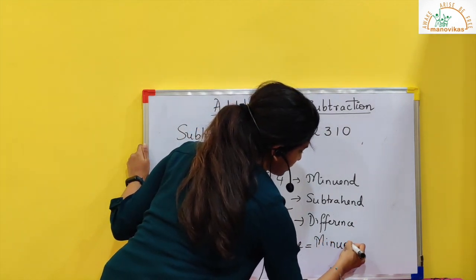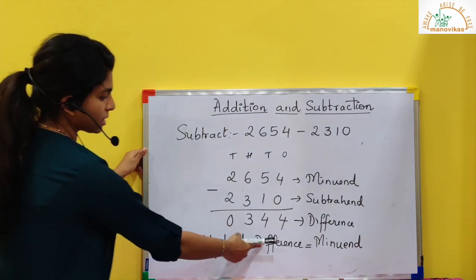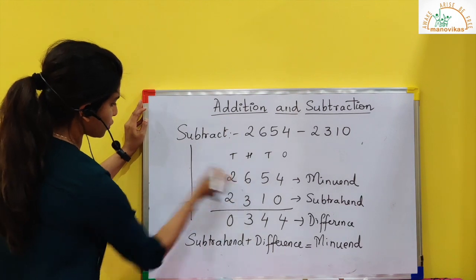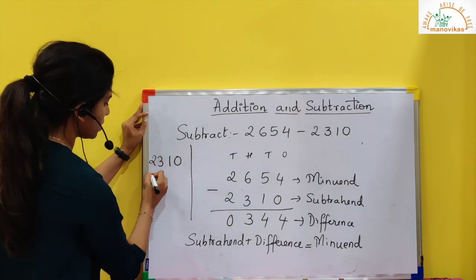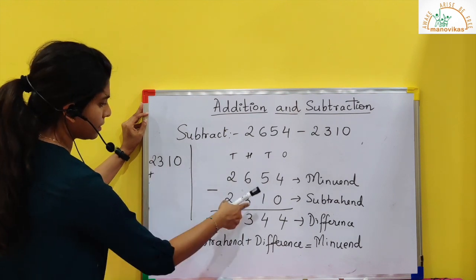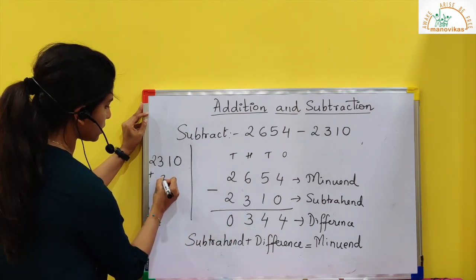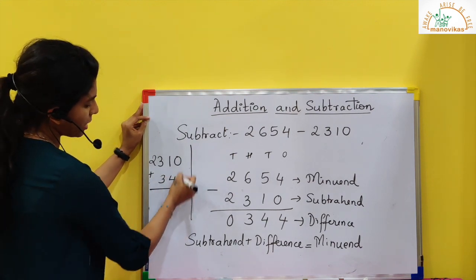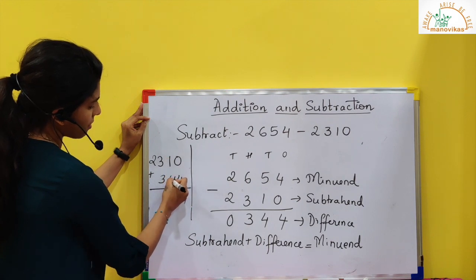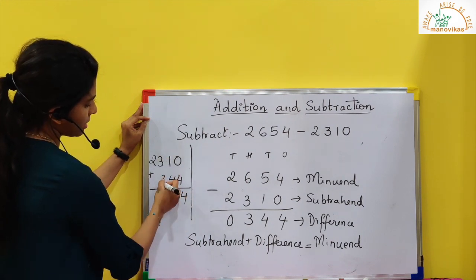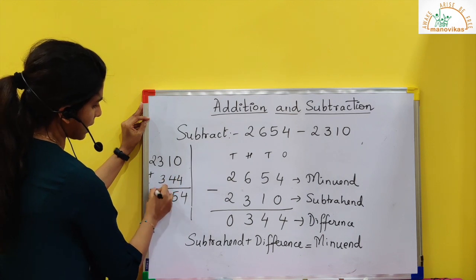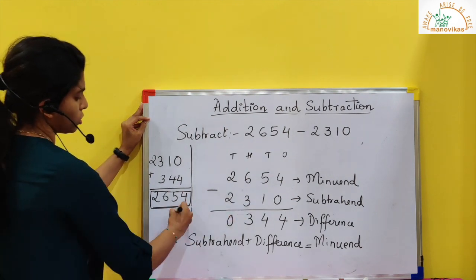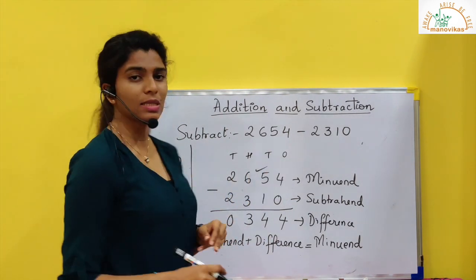So let's try it. I say subtrahend plus difference will give me minuend. So what is the subtrahend? Subtrahend is 2, 3, 1, 0. Plus — I will write addition sign here — and the difference I got is 3, 4, 4. After adding: 0 plus 4 is 4, 4 plus 1 is 5, 3 plus 3 is 6, and 2. Can you see? My answer is same as the minuend. So the subtraction is correct.